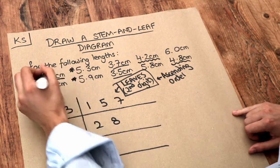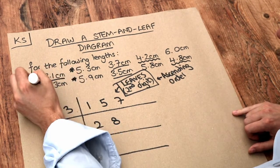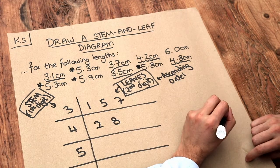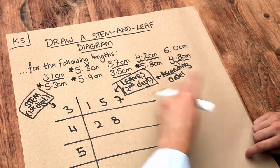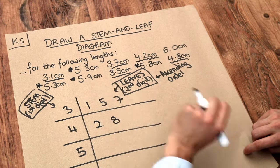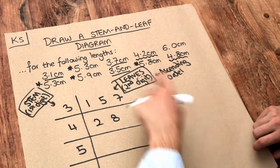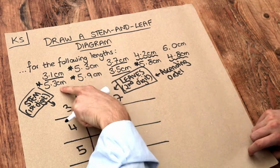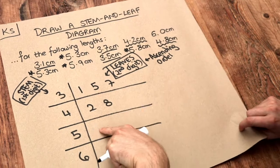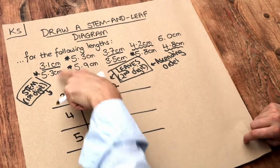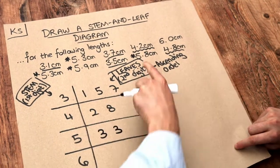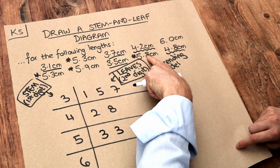Now what about the fives? We've got four values starting with five, and the second digits are three, three, eight, and nine. Note that we've got two threes here — we do have to put duplicates, we don't just put it once, we put it each time we see it. So: three, three, eight, nine.